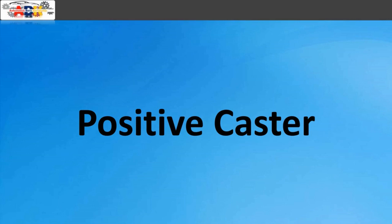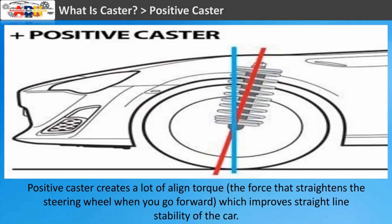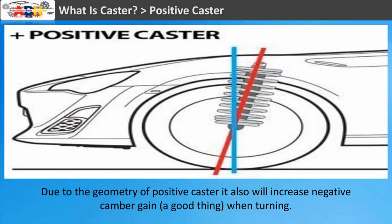Positive caster is when the steering axis is in front of the vertical. In a road car, this means that the top of the coil over would be pushed towards the rear of the car. Positive caster creates a lot of aligning torque — the force that straightens the steering wheel when you go forward — which improves straight-line stability. Due to the geometry of positive caster, it also increases negative camber gain, which is a good thing when turning.